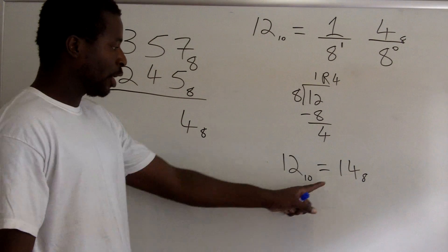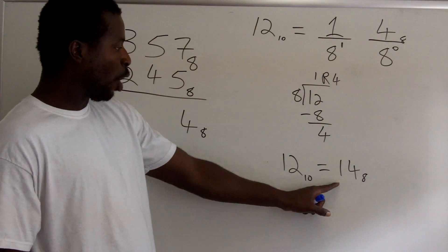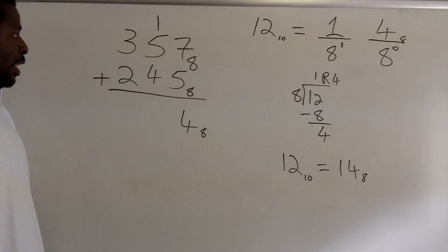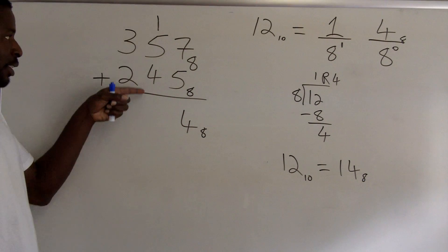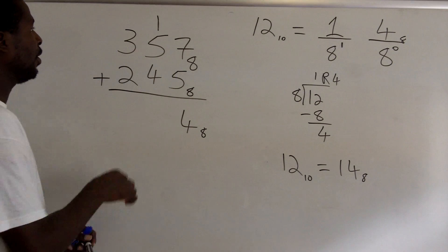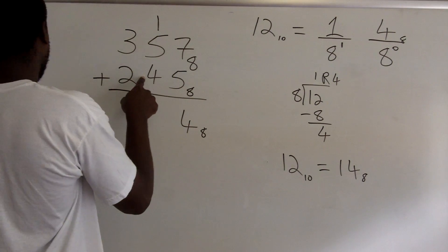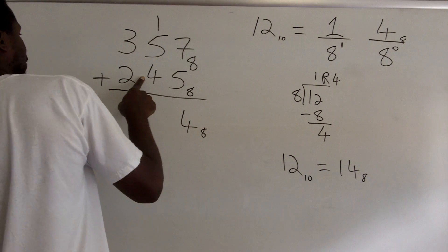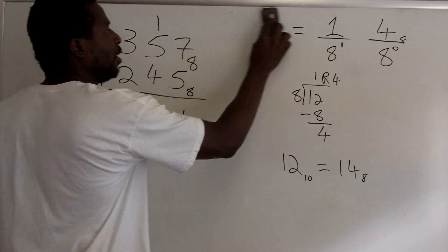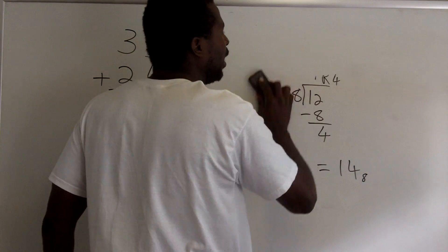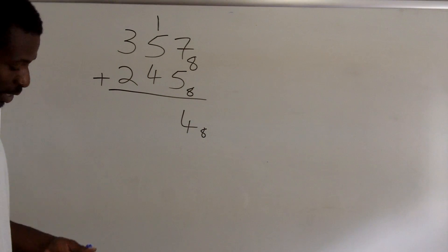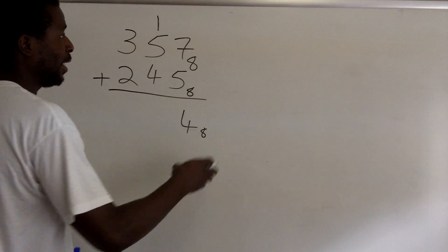Now I'm going to add this column. We have 5 plus 1 is 6, plus 1 is 10. So I get 10 here. 10 is bigger than 8, so when I'm thinking 10 I'm thinking 10 base 10.